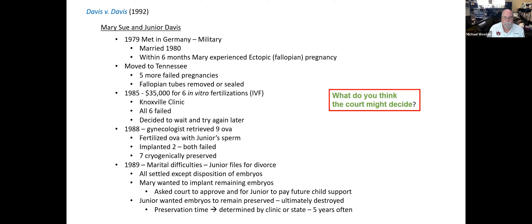So of course it goes to court. Here's basically the information — if you were sitting in a jury, this wouldn't be a jury trial, but if you're given this, what would you do? You've got these fertilized ova, some small potential — even though there's been a lot of failures, there's still some small potential that they could be implanted successfully. Should Mary be allowed to do that? And if she is allowed, should Junior then be responsible as the paternal unit?